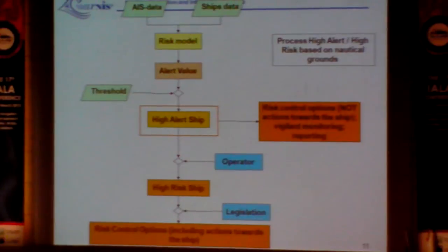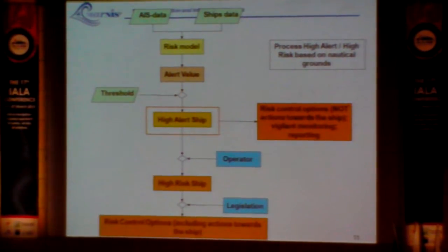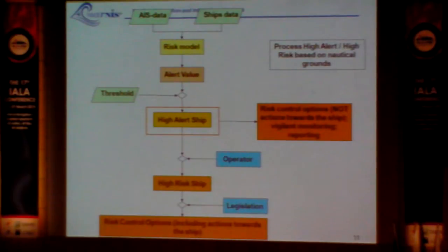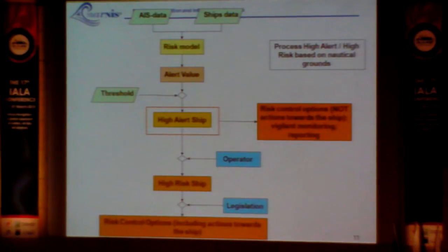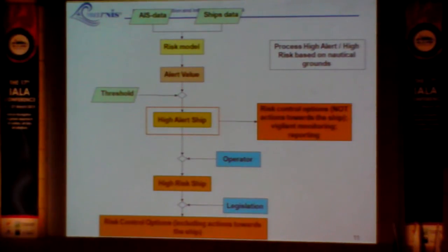What are we going to do with the risk? That's an important issue, because you can calculate risk but if you are not going to do anything with it, it's nonsense. Using AIS data, the SHIP data, as well as cargo data, we apply a risk model, calculate an alert value, and if the alert value is over a certain threshold, we call it an alert vessel. That vessel is indicated on the screen, providing the VTS operator with more information so they can decide to follow that ship more closely if it is a high-risk vessel.